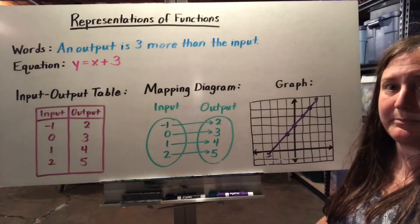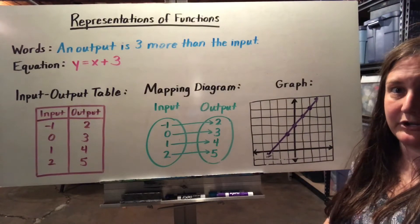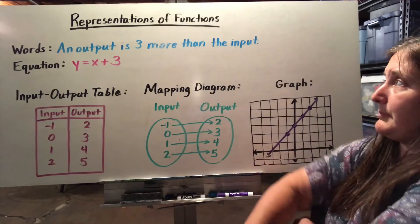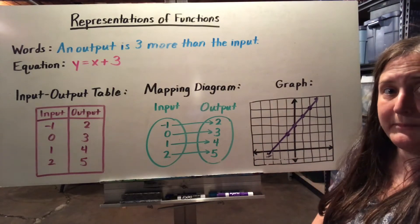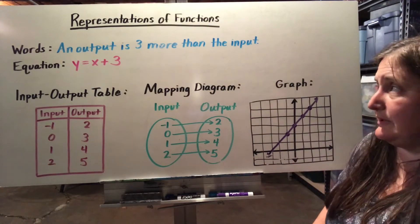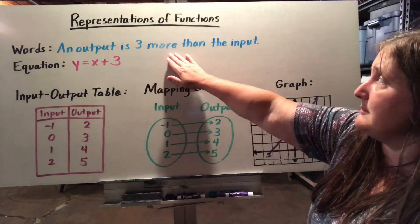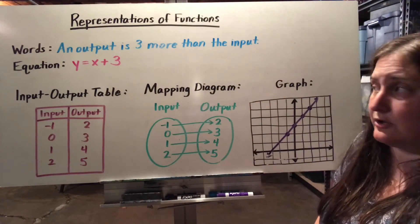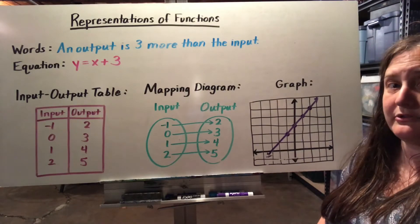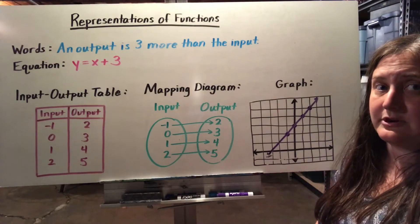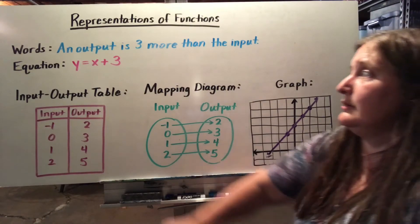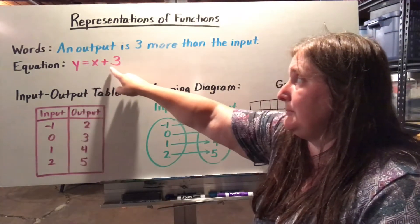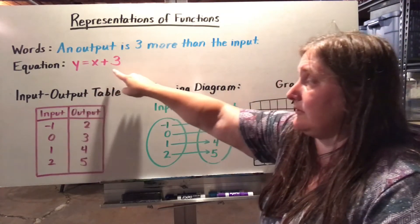We have many different ways of representing our functions. Here are some of the most common. We can write them in words and describe the pattern we see — for example, 'an output is three more than the input.' We can also change that into an algebraic equation: outputs are y values and inputs are x values, so y equals x plus three.